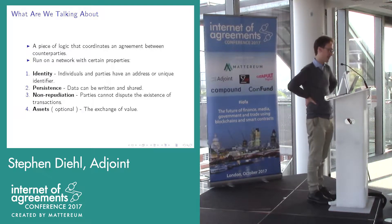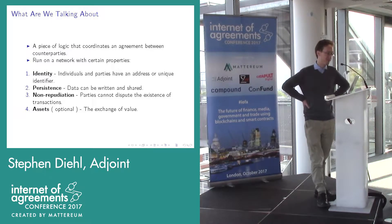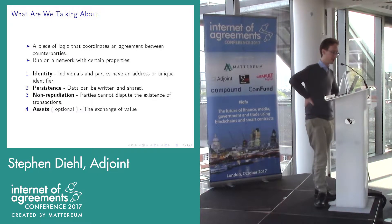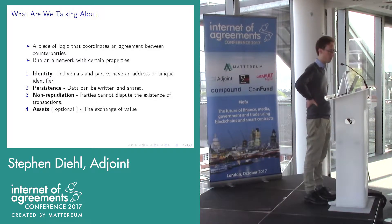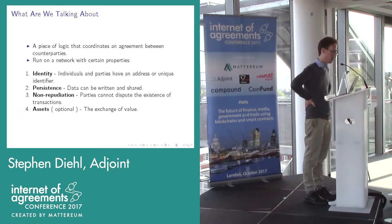Let's talk about smart contracts from first principles — what we need fundamentally. I need a piece of logic, a covariance, an agreement between the parties. It's run on a network with certain properties baked in. One is identity — individuals and parties have identities that can be used to transfer data and transact with each other. We have persistence — data is stored across the network and can be shared and used by contracts.